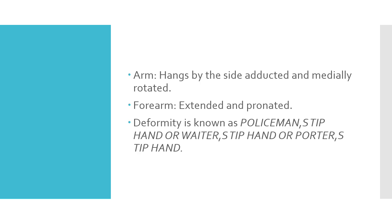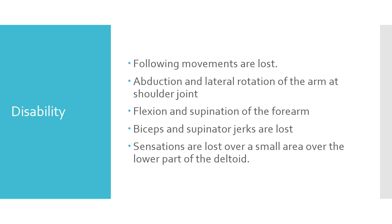There are other names for this deformity. It is called the policeman's tip hand, the waiter's tip hand, or the porter's tip hand. These are the common names given to the deformity seen in Erb's paralysis.